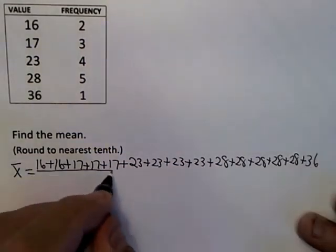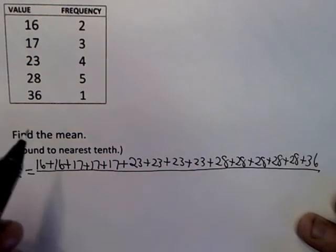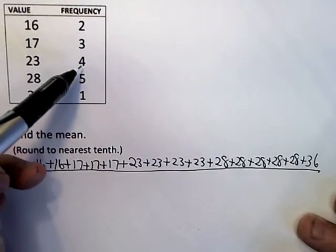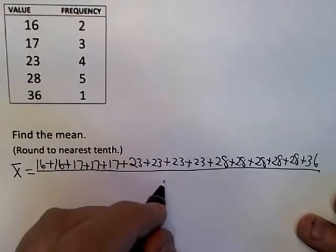And of course to do the average, you divide by the number of numbers that you're adding up. So that's 2, 5, 9, 14, 15.